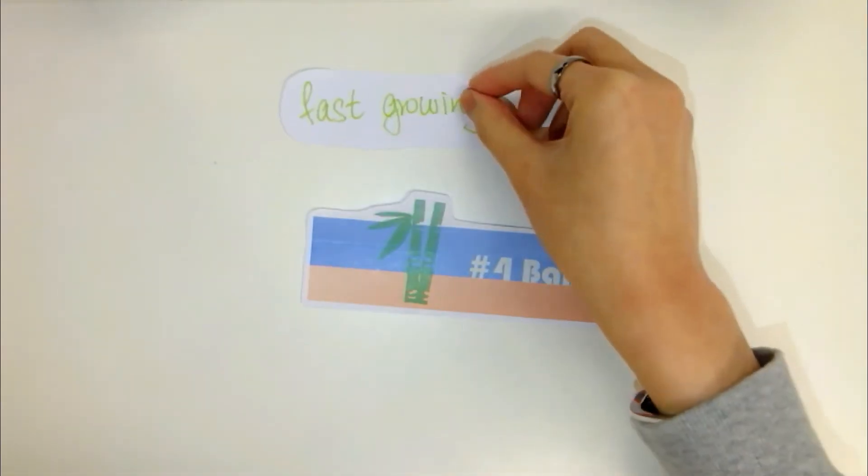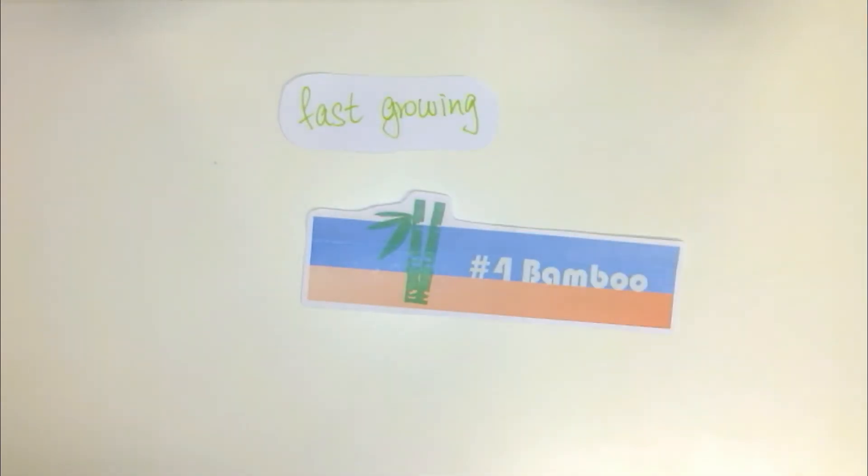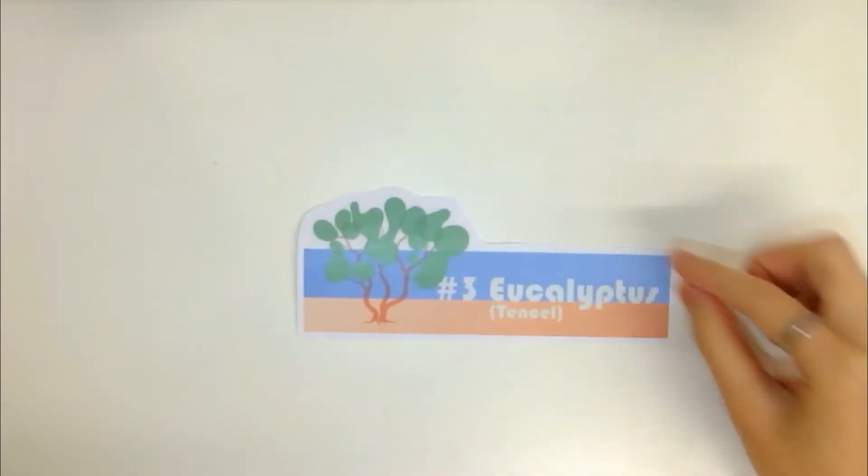Number 4: Bamboo. It's the fastest growing plant in the world. Bamboo grows without pesticides or insecticides. It also requires 4 times less water compared to cotton.